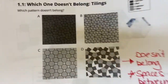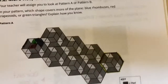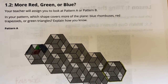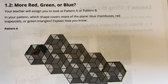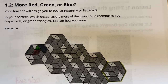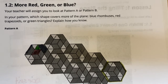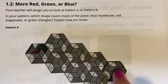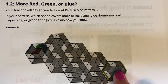All right, so we're going to go on to the next — that was just a warm-up. This says you're going to look at pattern A or pattern B, and in your pattern, which shape covers more of the plane? The blue rhombuses — rhombuses are your four-sided figures — the red trapezoids, which are also four-sided figures, and green triangles.